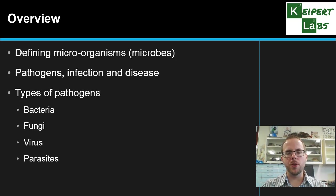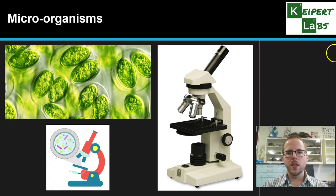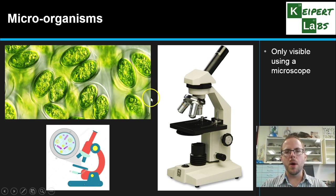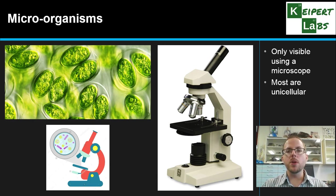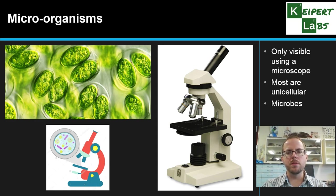So we're going to start by thinking about what microorganisms are. You can see some examples of microorganisms here, shown in that photo on the left. The idea is that microorganisms, or microbes, are only visible when using a microscope — so if you need a microscope to see them, it's a microorganism. Most of them are unicellular, or one cell, though some can be small multicellular organisms. Microbes is the shorthand abbreviation that we tend to use through this presentation.